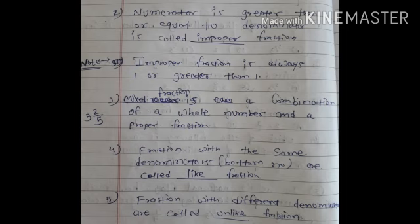Second one, numerator is greater than or equal to denominator is called dash fraction. Okay? Aisa numerator, greater than or equal to denominator, usko kya kahenge? Improper fraction. Notice that improper fraction is always one or greater than one. Okay? Improper fraction hai woh, always one or one se greater hota.